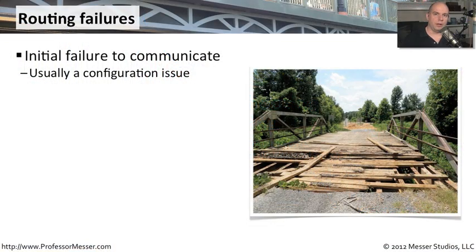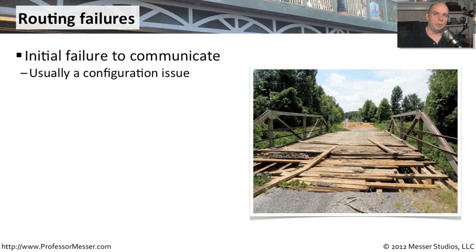If we're configuring routing on our devices, we're setting up a router and configuring how we would like these routing protocols to operate. Are we going to do static routing, or are we going to use dynamic routing protocols? All of these things go into the config. And if we're having a problem right out of the gate and we're not able to send or receive traffic, we probably have some type of configuration issue. When you're initially setting up a router, you can almost bet there's going to be some type of config problem you'll need to troubleshoot.